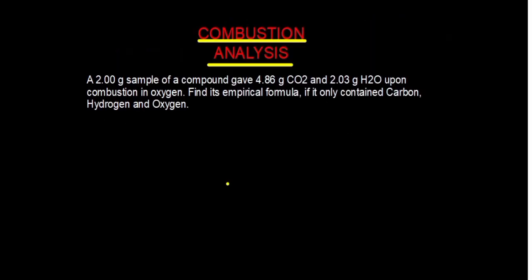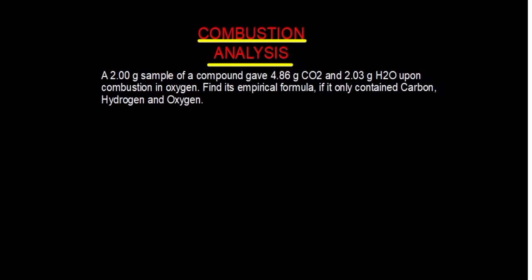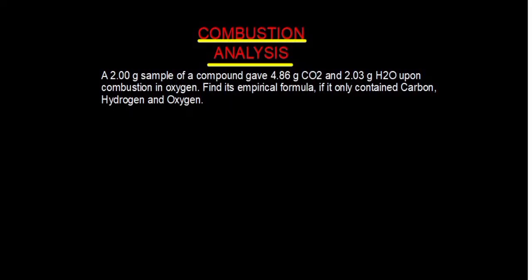We have a question to guide us. A 2-gram sample of a compound gave 4.86 grams of carbon dioxide and 2.03 grams of water upon combustion in oxygen. Find the empirical formula if it only contained carbon, hydrogen, and oxygen. From the question, we are told that the compound is made up of carbon, hydrogen, and oxygen.